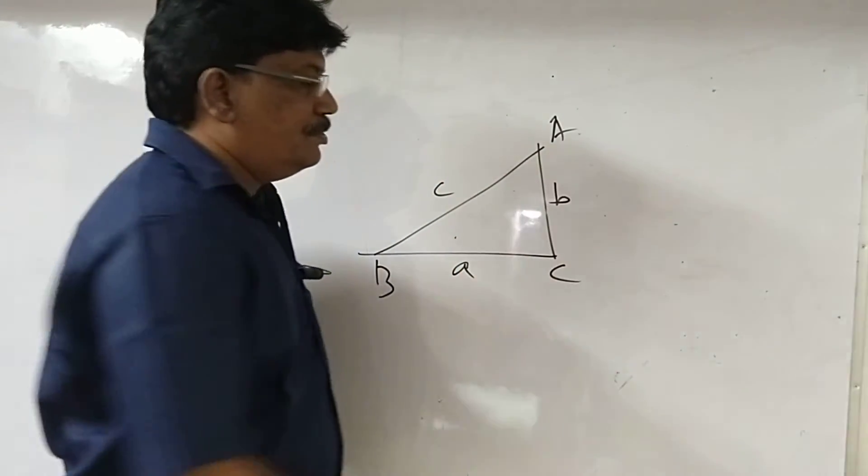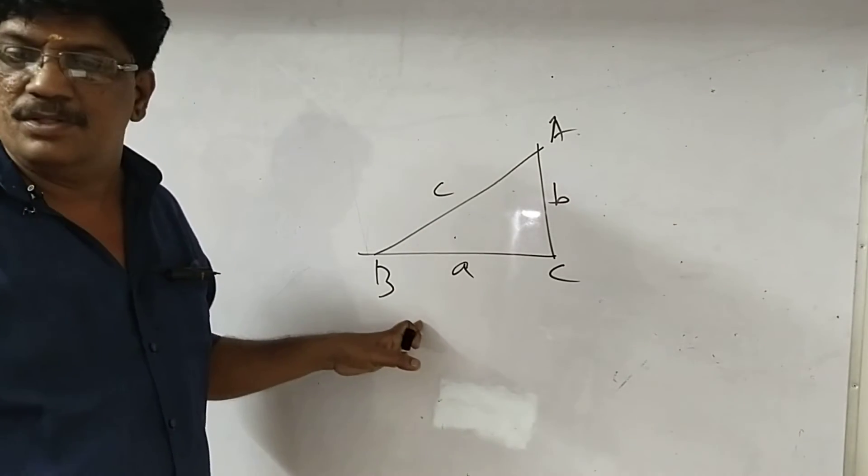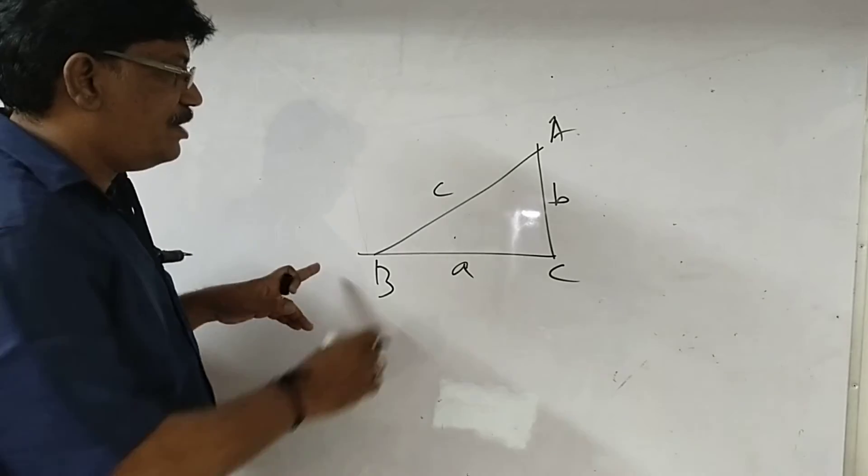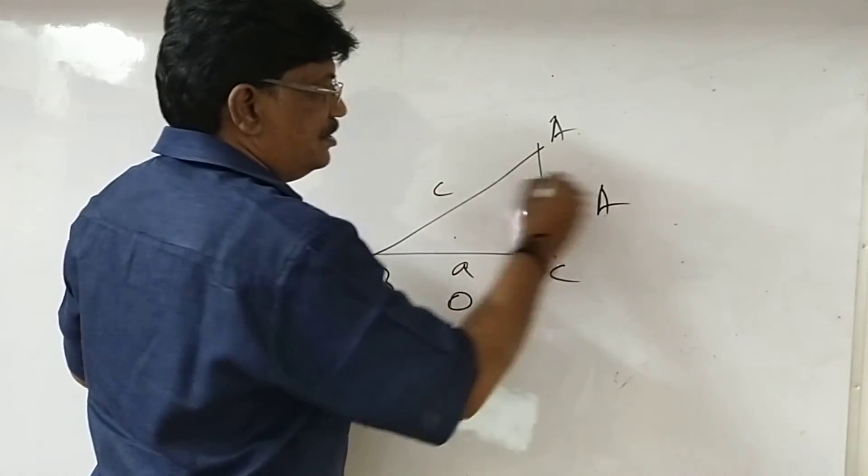They are asking for cosecant A. This is the opposite, this is adjacent, this is hypotenuse.